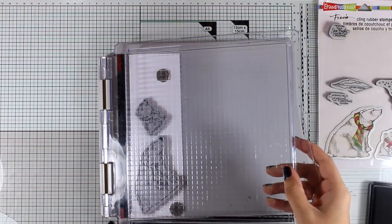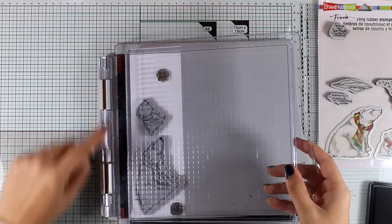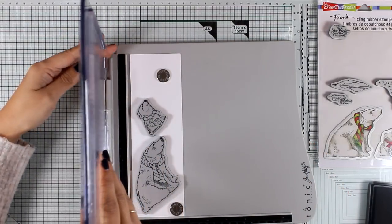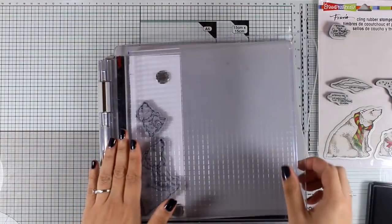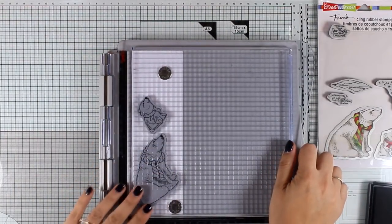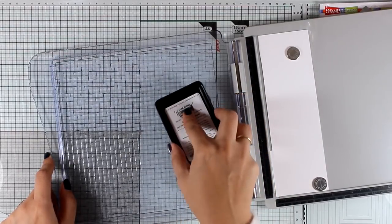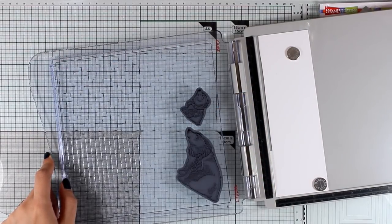I'm going to use my Tim Holtz stamping platform to stamp both images. I have to switch the door because these stamps are not clear stamps, they are rubber stamps. I'm using a black alcohol marker friendly ink pad to stamp the images.